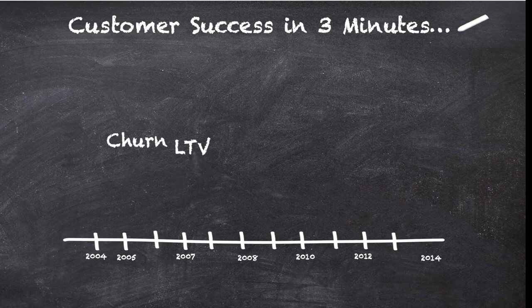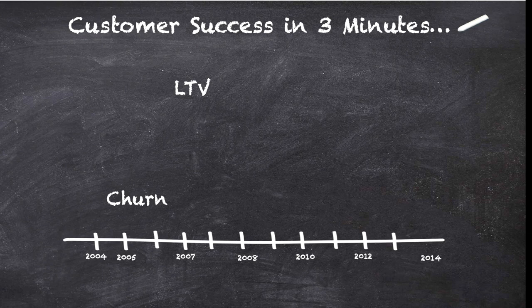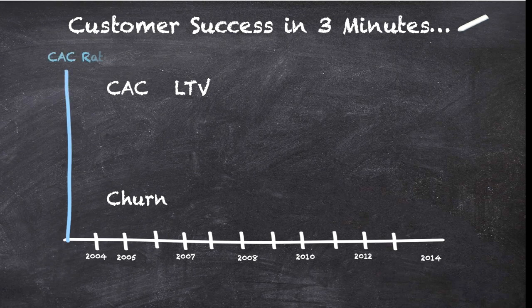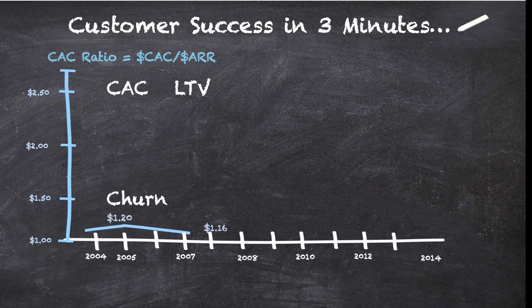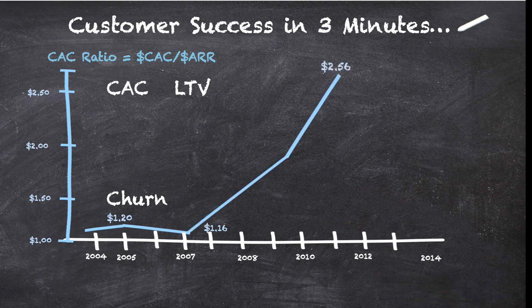We all get that as churn goes down, LTV goes up. What's important to recognize as well is that when LTV goes up, it allows you to drive your customer acquisition cost up. What we're looking at here for Salesforce is their CAC ratio — basically how much they spend for a dollar of new ARR. After the big announcement, this number didn't go up much, but in 2007 when churn was under control, it skyrocketed to over two and a half dollars.